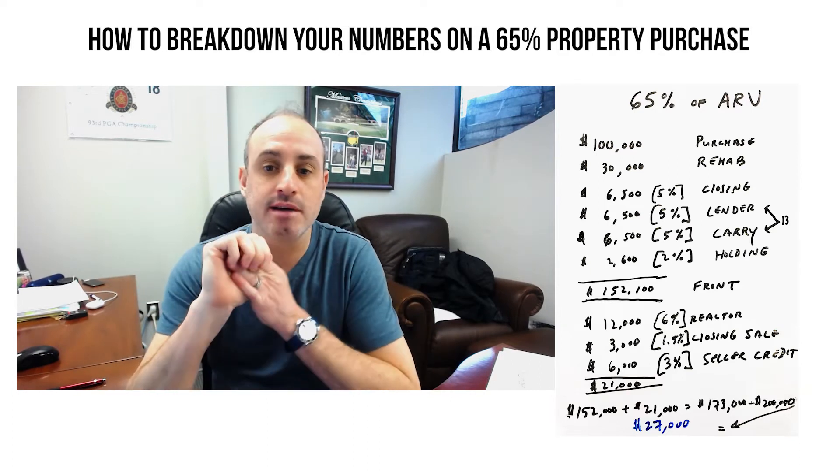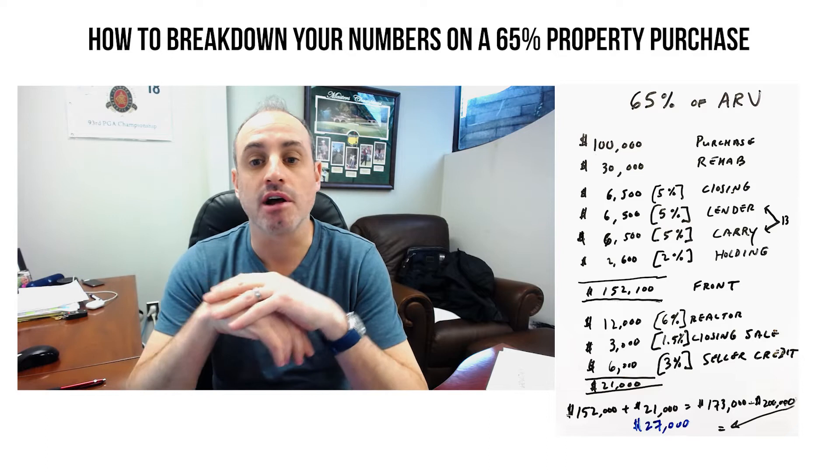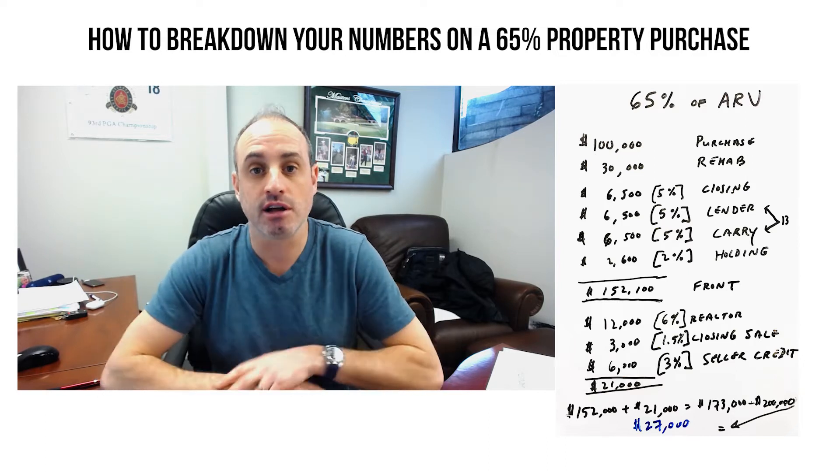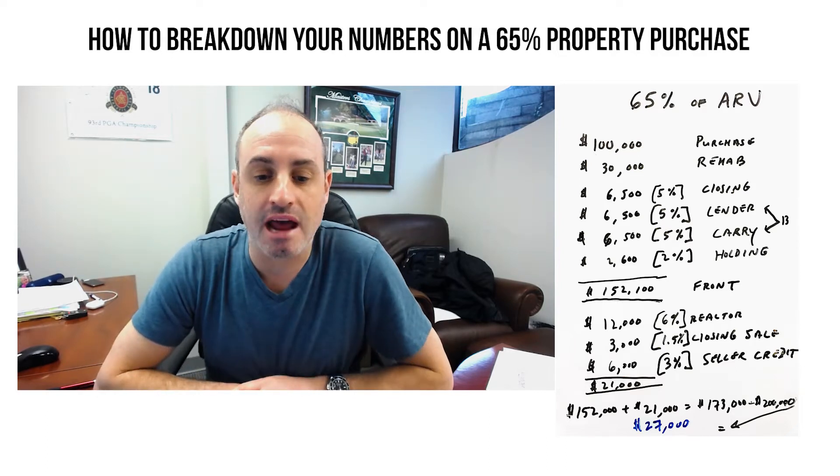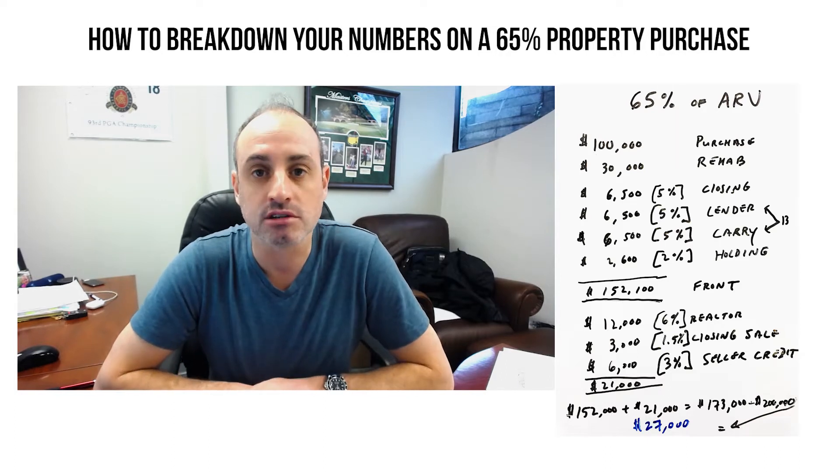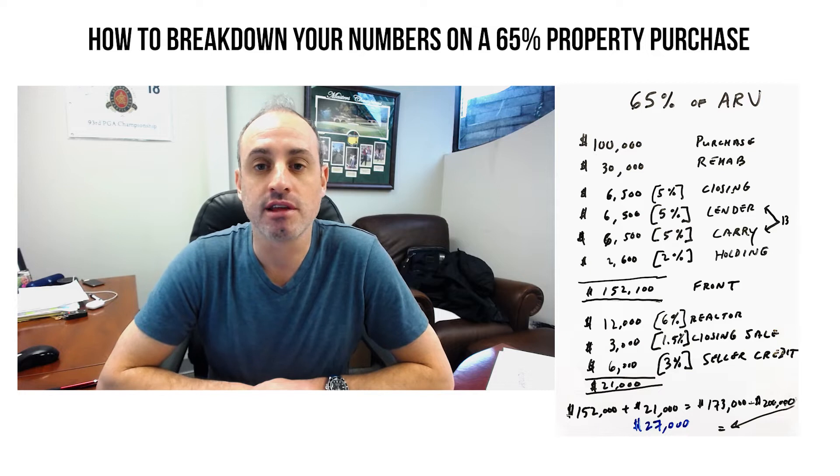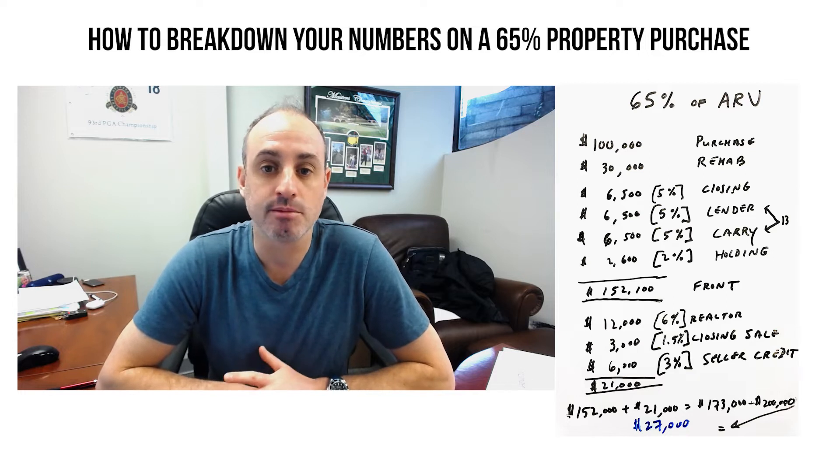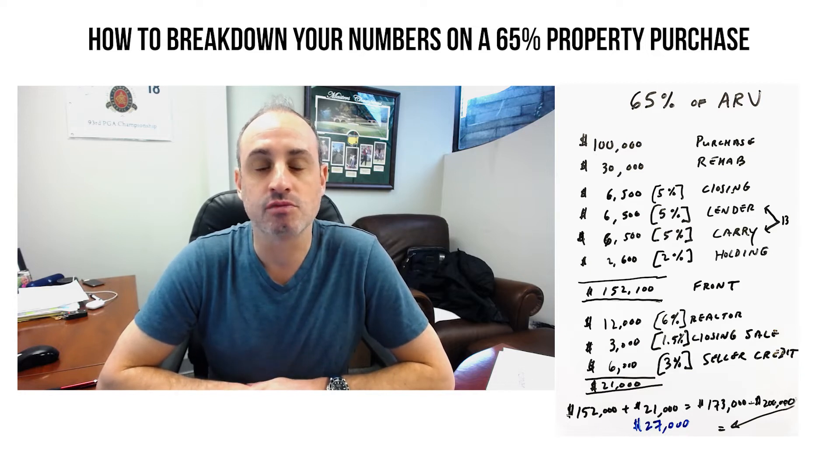So in this particular example, you'll see that the purchase price is $100,000 and the rehab costs are $30,000 with an after repair value of assuming $200,000. So 65% of $200,000 is $130,000, which is the key number to buy.